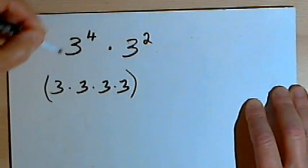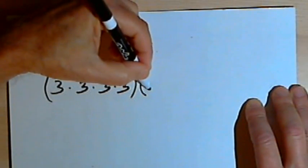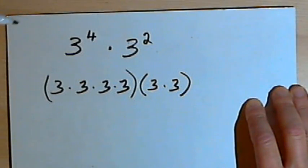And I'm multiplying that by the second number, 3 squared, or 3 times 3.